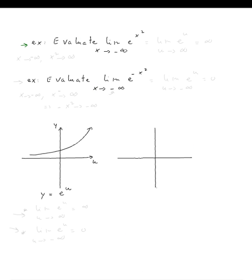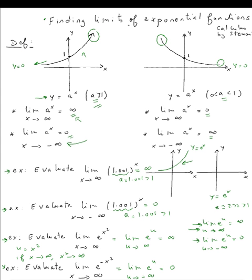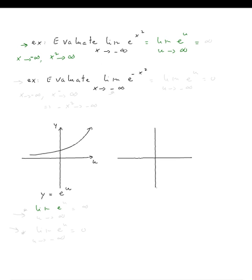Now let's look at the next example: limit of e to the x squared as x approaches negative infinity. Using substitution, this equals the limit of e to the u as u approaches — well, as x approaches negative infinity, when you square it, you don't approach negative infinity; you approach positive infinity again, because squaring negative numbers gives positive results. So u approaches positive infinity, and using that definition, the answer is positive infinity.